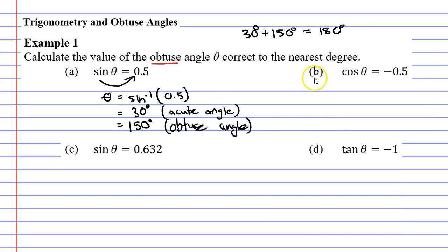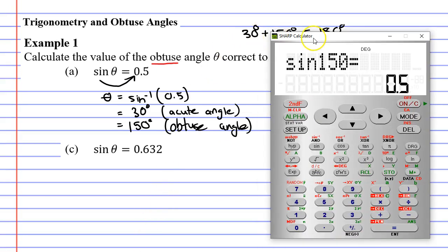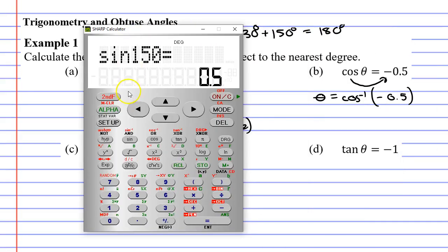Let's now move on to question B. This one says that cos theta equals negative 0.5 and we want to calculate the obtuse angle theta. We know that we need to bring cos to the other side and we need to use inverse cos. So we go theta equals inverse cos or cos to the negative one and in the brackets we're going to put our number negative 0.5. So once again we just solve it how we normally would on a calculator.